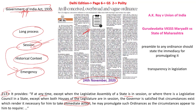Whenever an ordinance is passed, the minister will also have to explain the reasons for its promulgation once the assembly is back in session. Now, a simple question: can the governor pass an ordinance when the house is adjourned? The answer is no. The governor can issue an ordinance only when the house is prorogued, not when it is adjourned. Only when the session is terminated can he exercise the ordinance making power.